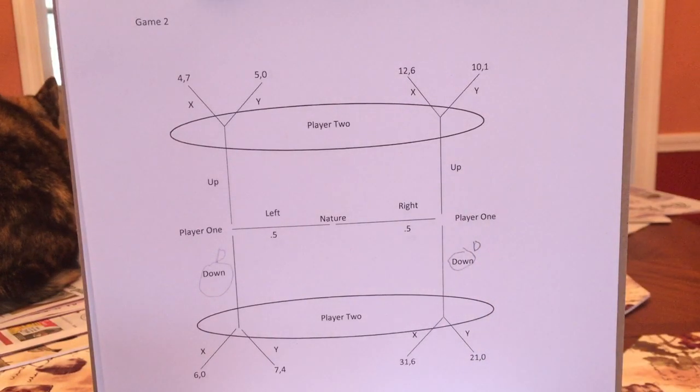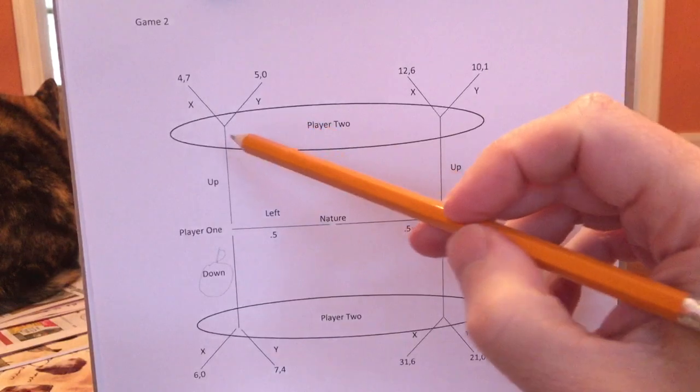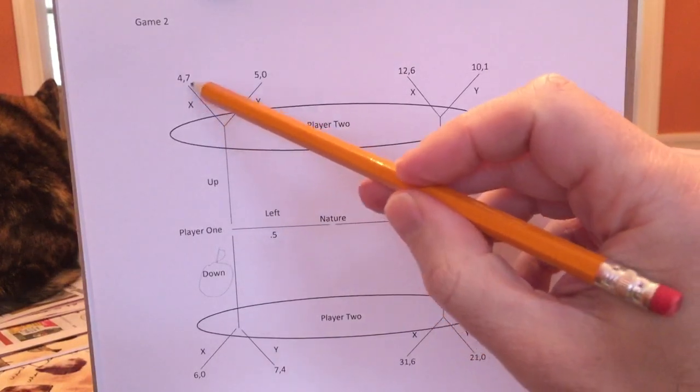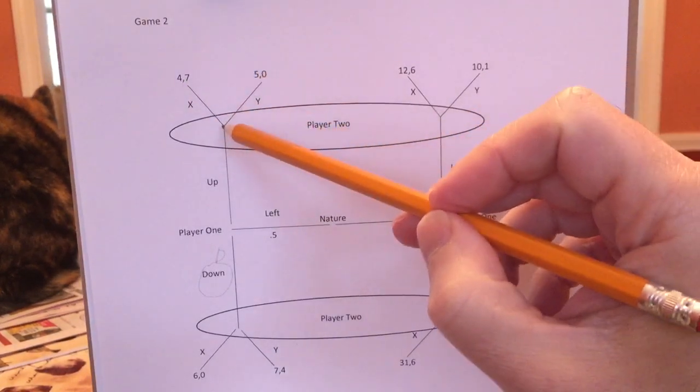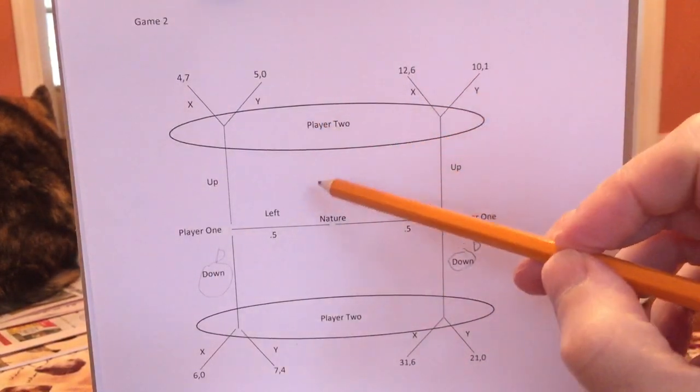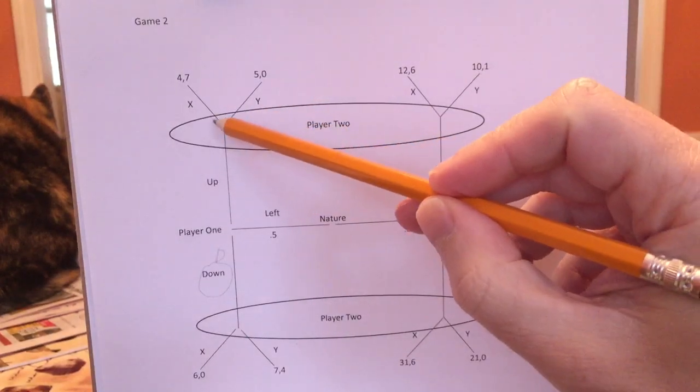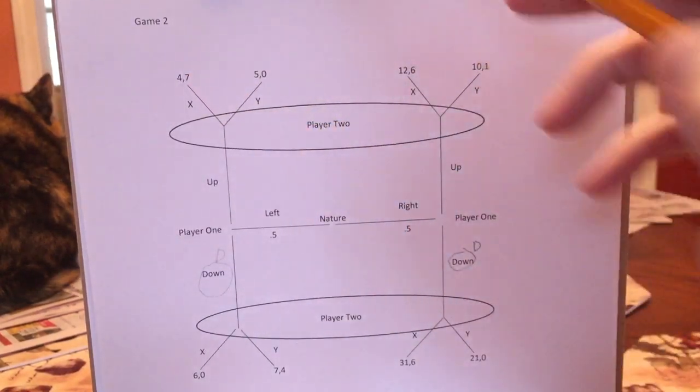Now you're Player 2. If you go up, you have a choice. You might get seven or zero if you're here. And if you're here, you would get six or one. So you would say if you're Player 2 and up is played, and it won't be, but if it were, here you would want x. Here you'd want x.